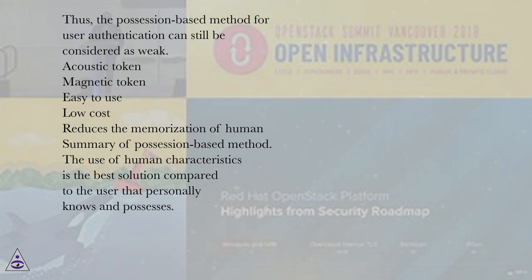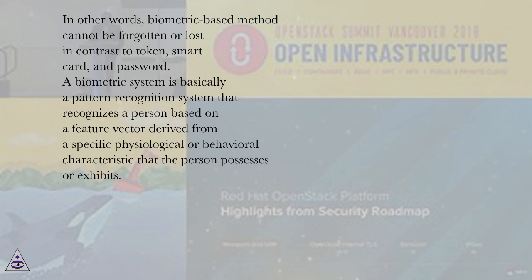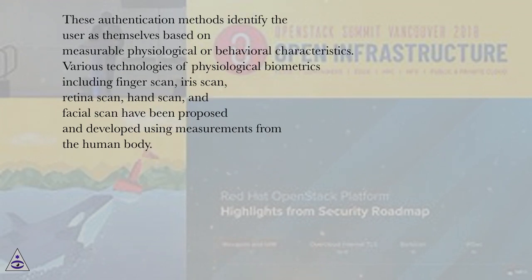The use of human characteristics is the best solution compared to what a user knows or possesses. In other words, biometric-based methods cannot be forgotten or lost, in contrast to tokens, smart cards, and passwords. A biometric system is basically a pattern recognition system that recognizes a person based on a feature vector derived from a specific physiological or behavioral characteristic. Various technologies of physiological biometrics, including finger scan, iris scan, retina scan, hand scan, and facial scan, have been proposed and developed using measurements from the human body.